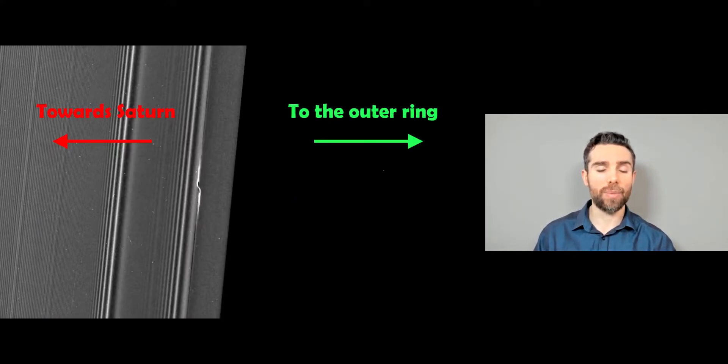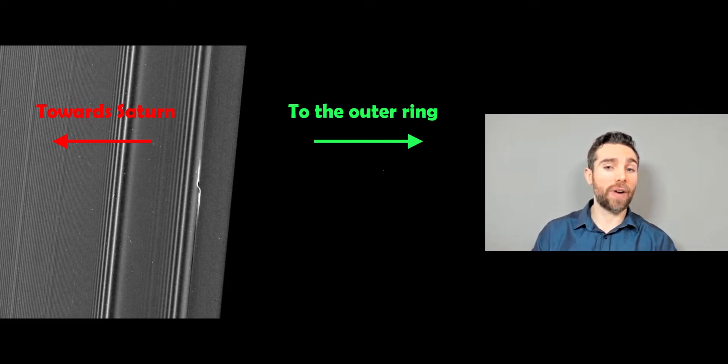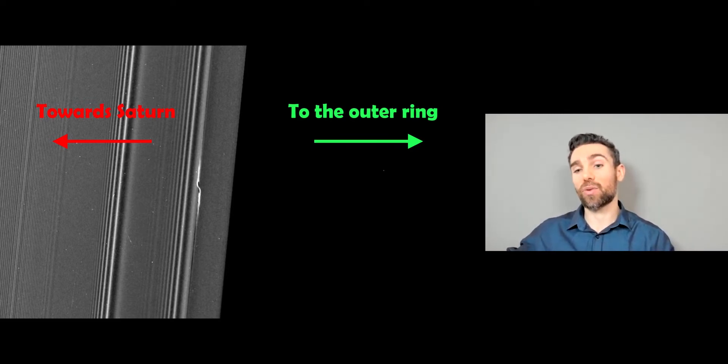So we go back to the propeller shape. In this one here, towards the left-hand side is towards Saturn. That means that anything on the left-hand side of the propeller shape is orbiting faster than the ring structure on the opposite side, which is towards the outer edge. So anything on the left-hand side is actually overtaking the moonlet and the propeller shape. And anything on the right-hand side, which is further out, is actually going slower. So the moonlet or the propeller is going faster or overtaking particles in the outer part.